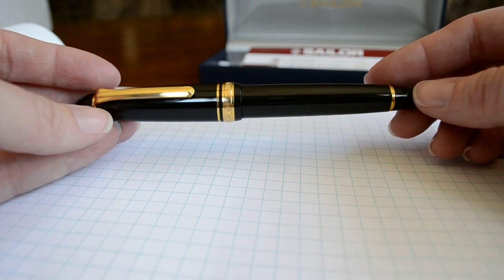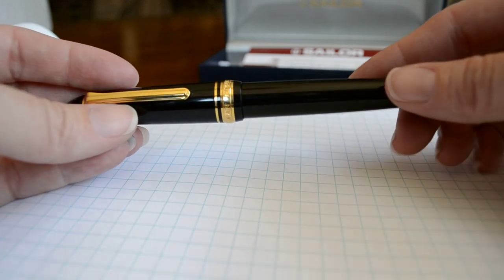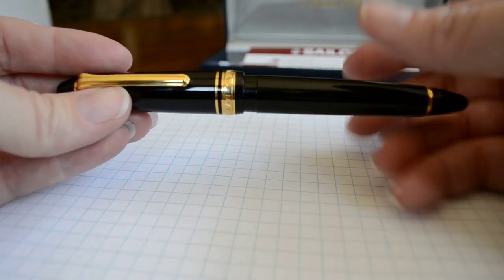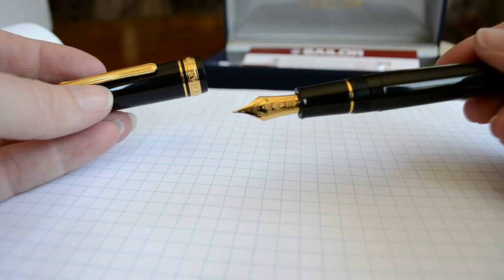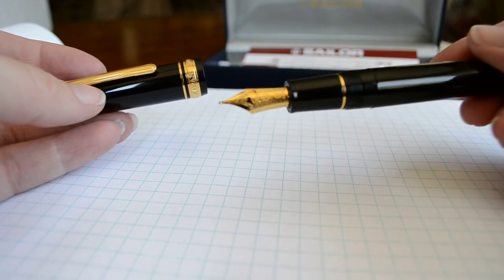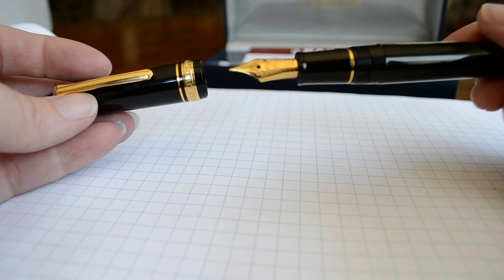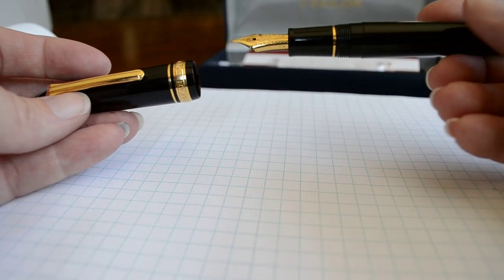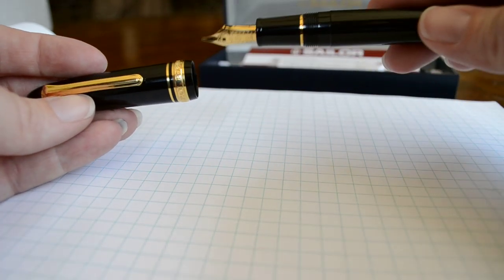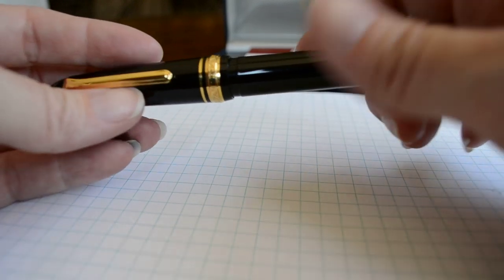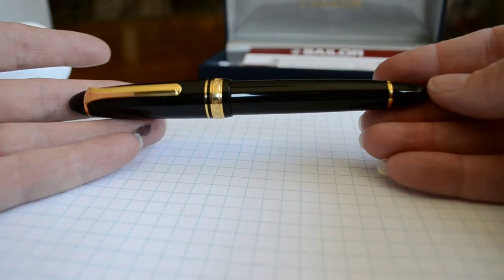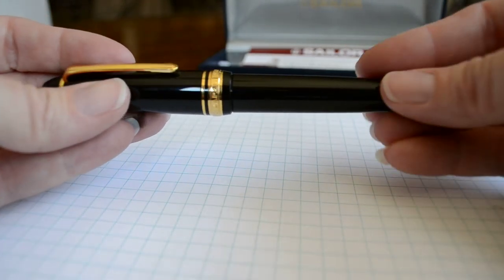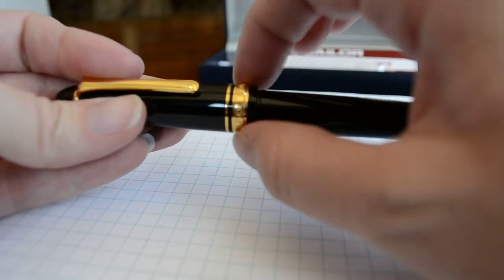Just to give you some of the options available on this pen: the nib is available in extra fine, fine, fine medium, medium, broad, music, and zoom. It's 139 millimeters capped, 121 millimeters uncapped, 11 millimeters at its widest point which would be this cap band here.